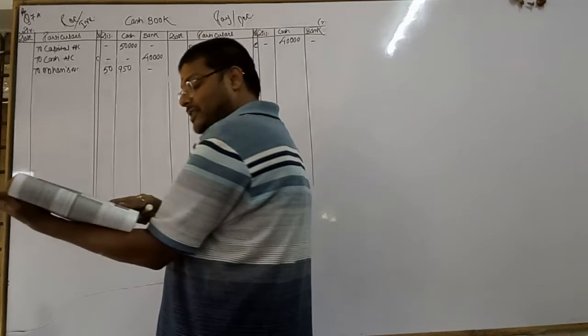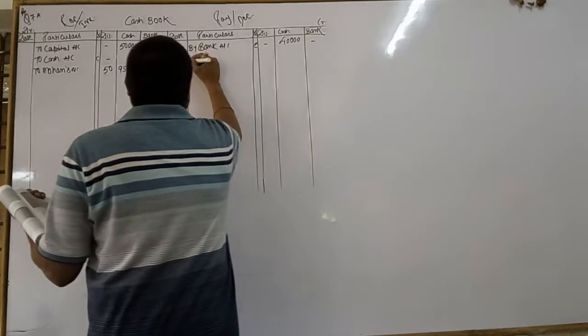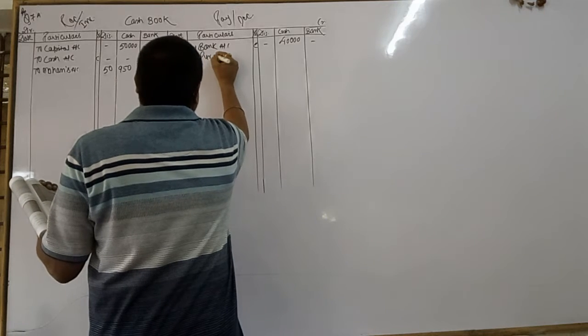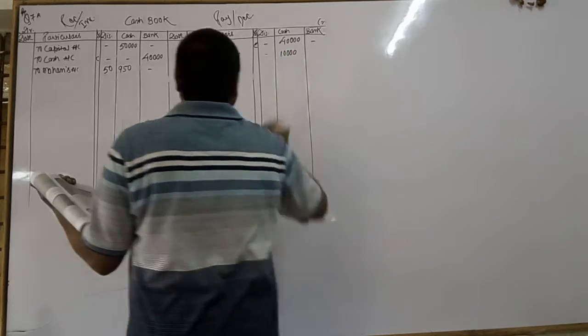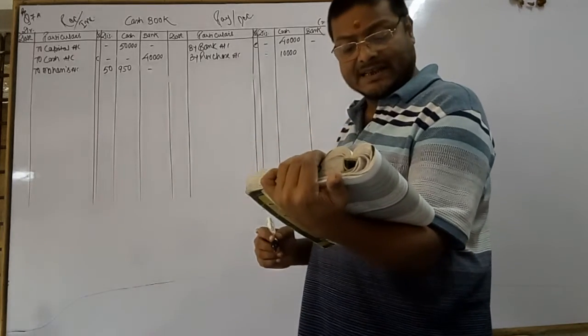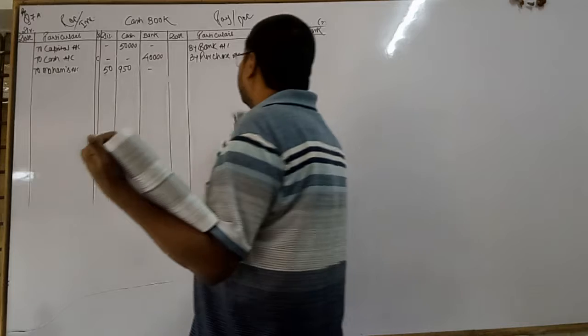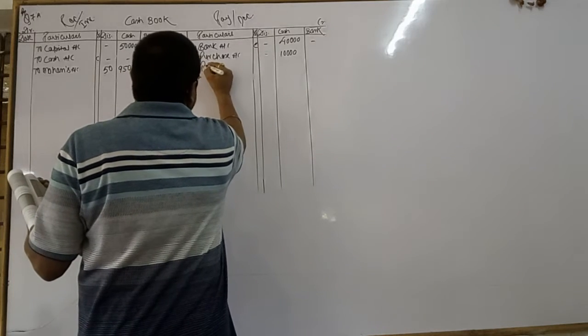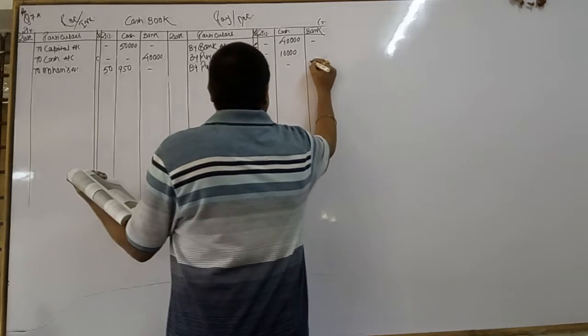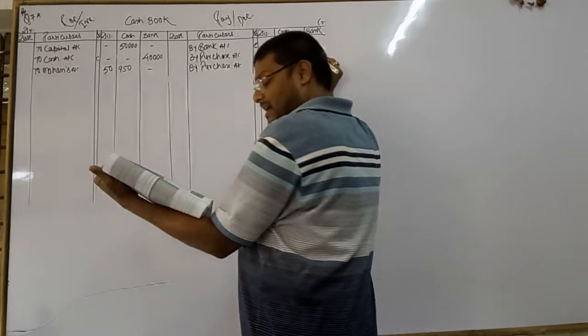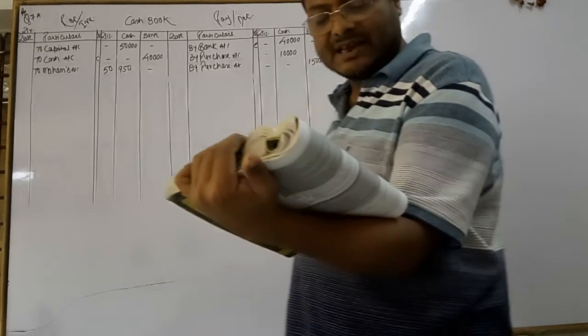Bought goods for cash rupees 10,000 by purchase. Amount rupees 10,000. Next sentence, bought goods by check. This time we purchased, cash purchase, or payment how? Check se jara hai. That's why we use bank column.